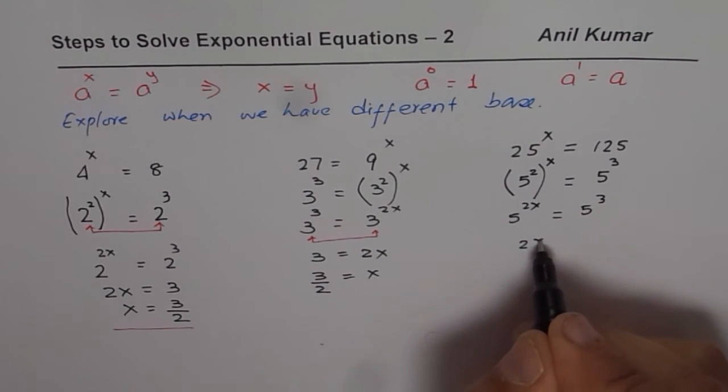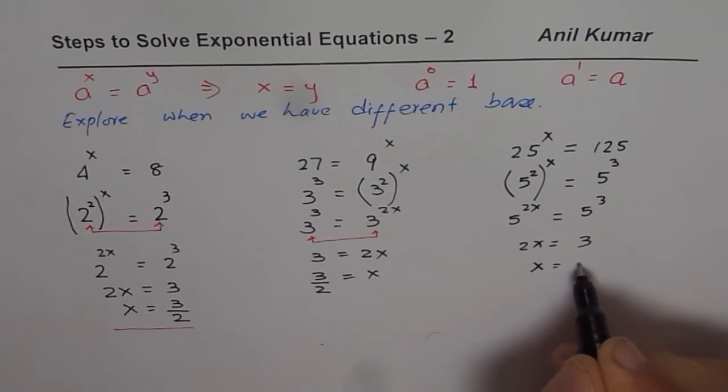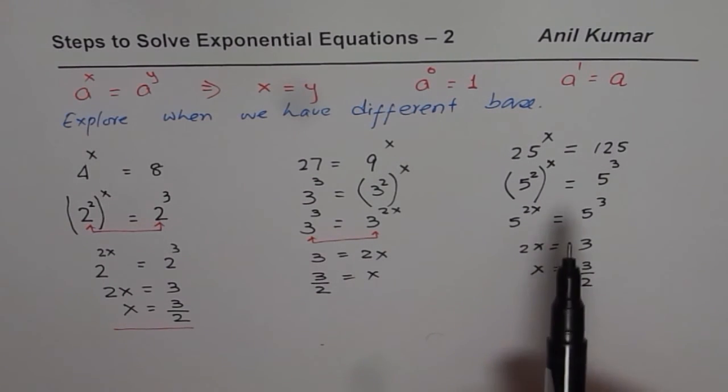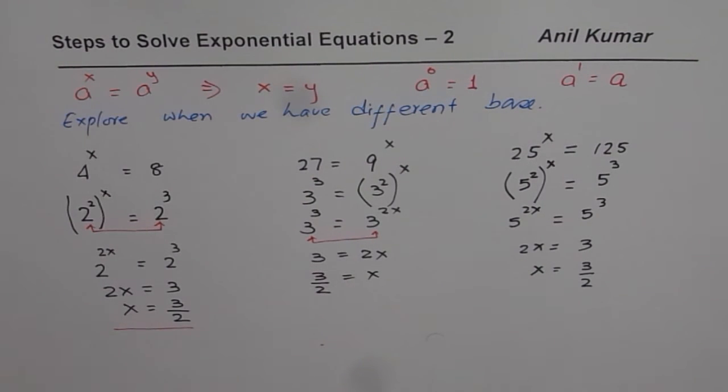2x equals to 3, x equals to 3 over 2. So we get x equals to 3 over 2. So that is how we could solve these exponential equations.